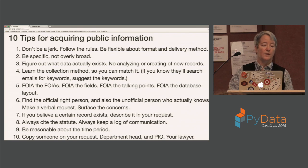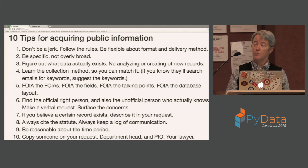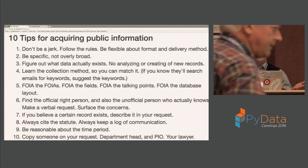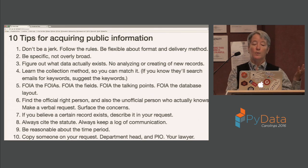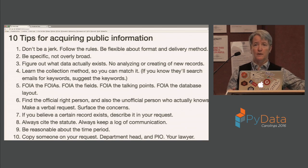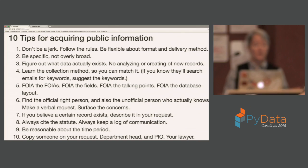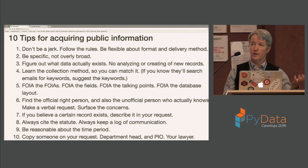Another tip: FOIA the FOIAs, and FOIA the fields, the talking points, and the database layout. All of that can help you figure out what information the government even has, and all of that is public. When you ask for things like what FOIAs have been filed, you might learn that the NRA has a database of concealed carry gun holder permits, or that a news organization or the ACLU has asked for a database you want. You can piggyback on a FOIA request from somebody else — it's public that they asked for it.